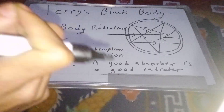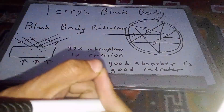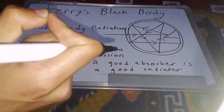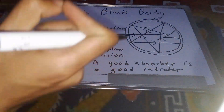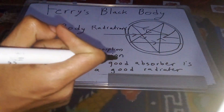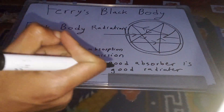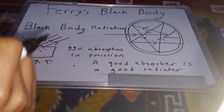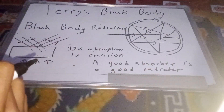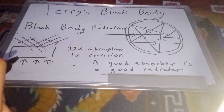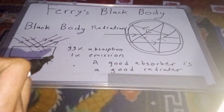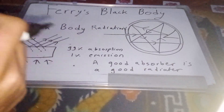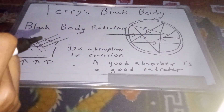A black body absorbs light. A perfect black body absorbs 100% of light.